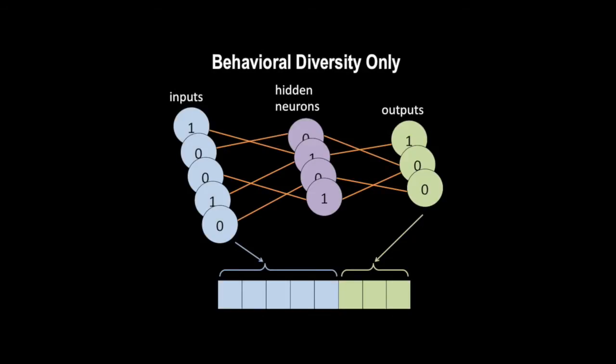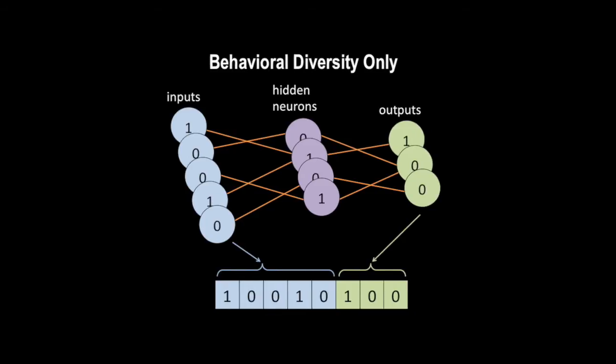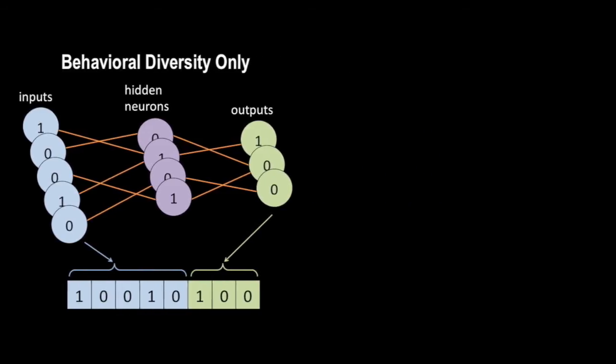Previous methods solely reward behavioral diversity. To calculate if a robot is novel, the neural activations of the robot's sensor or input neurons and motor or output neurons are stored and compared to those of other robots. We call this the behavioral diversity only treatment and use it as the control in our experiments.